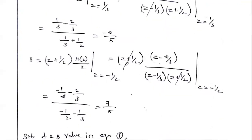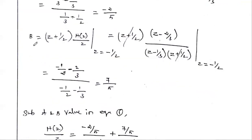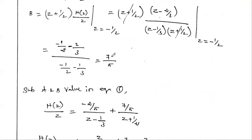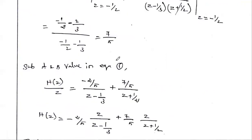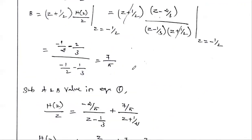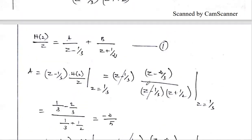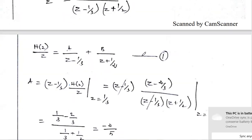Similarly, B equals (z + 1/2) multiplied by H(z)/z, evaluated at z = −1/2. Using the same method, we get B = 7/5. After calculating A and B, substitute these values back into the partial fraction equation.